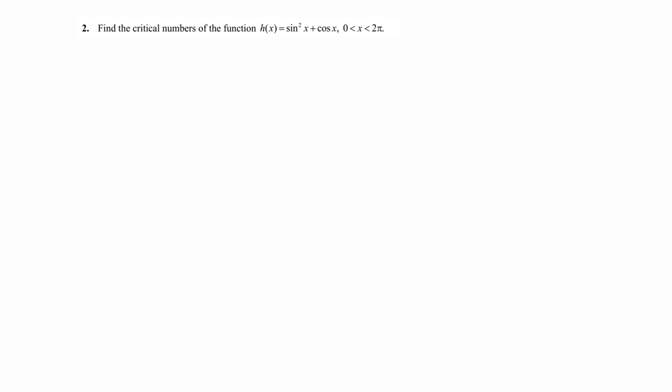The second problem says find the critical points — critical numbers — of the function h(x) = sine squared of x plus cosine of x. To find the critical points, we find the slope and then set it equal to zero, finding the point x at which the slope is zero or is a horizontal line.